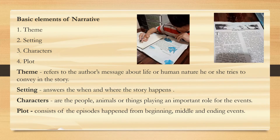The basic elements of narrative include the theme, setting, characters, and plot. Theme refers to the author's message about life or human nature he or she tries to convey in the story. The setting answers the when and where the story happens, and the characters are the people, animals, or things playing an important role in the event.